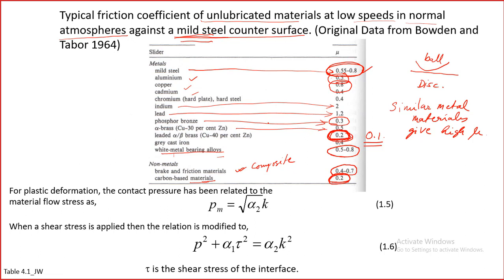Coefficient of friction is quite variable, and even for the same material there will be a lot of changes depending on the situation. We cannot say coefficient of friction is a fixed value — it changes, for example by alloying you can change coefficient of friction. There are a lot of possibilities for changes, and one reason why these changes happen is because of the adhesion property.